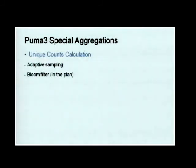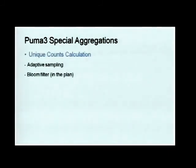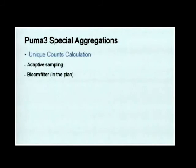Puma3 allows complex aggregations that were not supported in Puma2. For unique user counters, we already have adaptive sampling, which keeps at most 8,000 user IDs in memory and does sampling when the buffer fills up. We also plan to have a Bloom filter, which is standard technology to approximate unique counters.